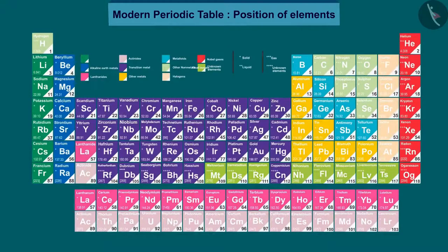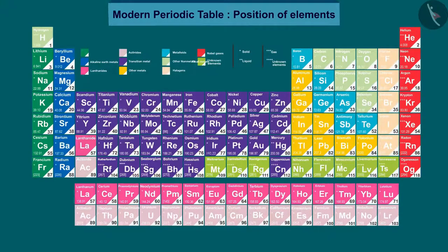The anomalous position of hydrogen can be discussed after we see what are the bases on which the position of an element in the modern periodic table depends. Let us now discuss the position of different elements in the modern periodic table.